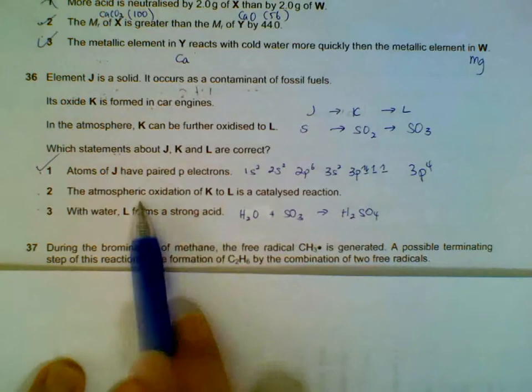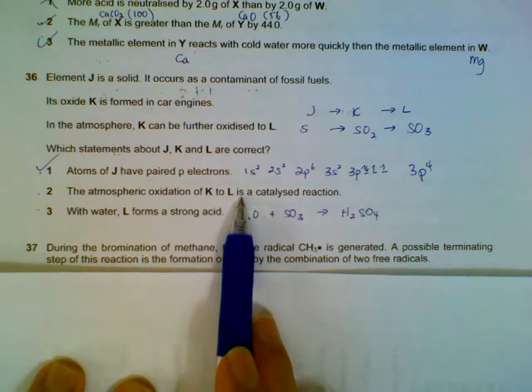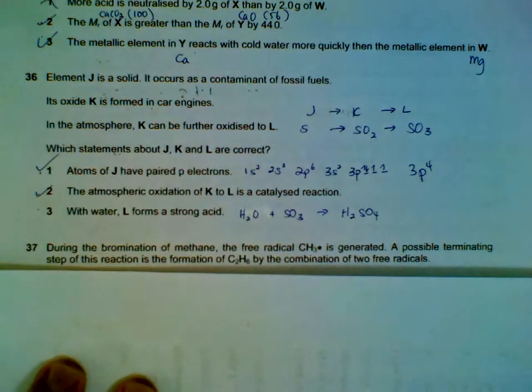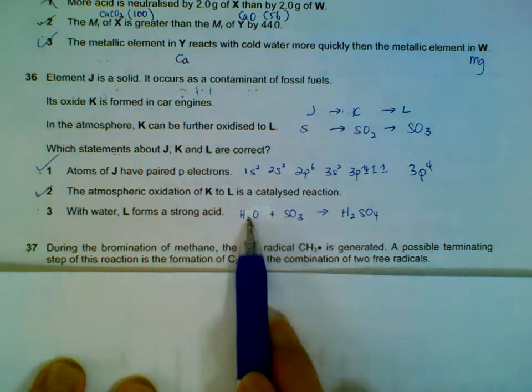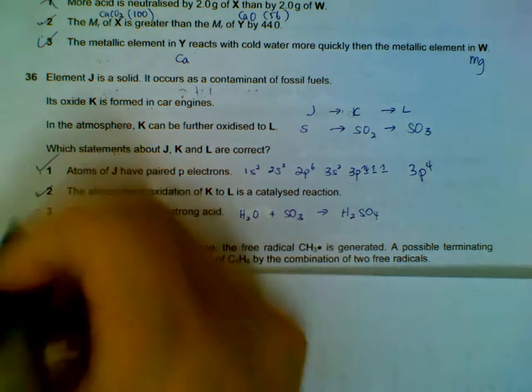To go from sulfur dioxide to sulfur trioxide, you do need a catalyst. It doesn't really take place that easily in the atmosphere. And then sulfur trioxide and water will form sulfuric acid, which is a strong acid.